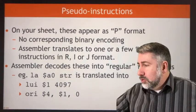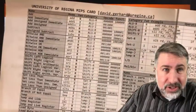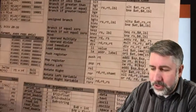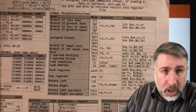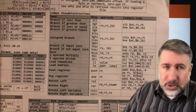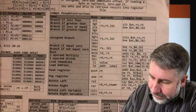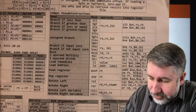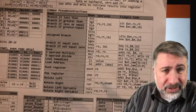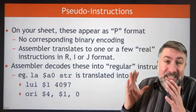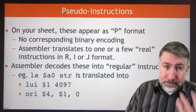On your reference sheet, pseudo-instructions have a format called P, and in fact they're not on the list of instructions at all — they're on the other side of the sheet in a big list called common pseudo-instructions. The ones we're using today are load immediate and load address. There are other ones too: push and pop for the stack, different kinds of branching, and other commonly used pseudo-instructions, which all get translated into real instructions by the assembler.